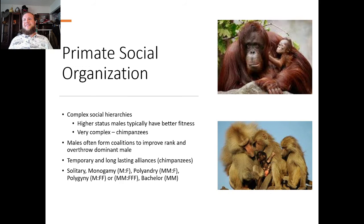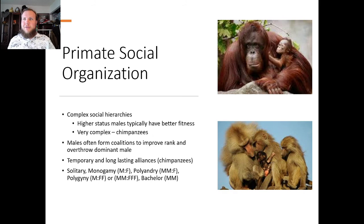The primary types of social organization are: solitary; monogamy — one male, one female; polyandry — multiple males and one female, like the tamarins; polygyny — like gorillas, one male and multiple females; multi-male, multi-female — like chimpanzees; and bachelor groups — roaming groups of males who are looking to overthrow a dominant male and take over their harem.